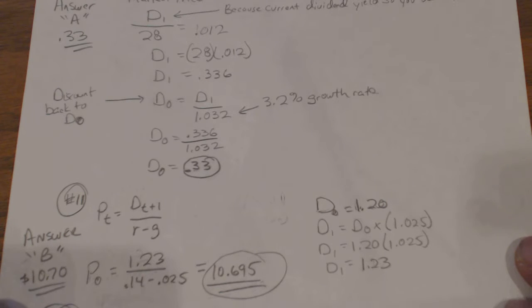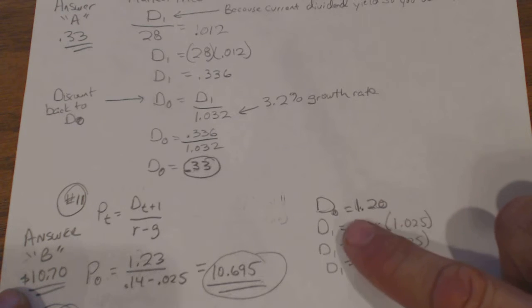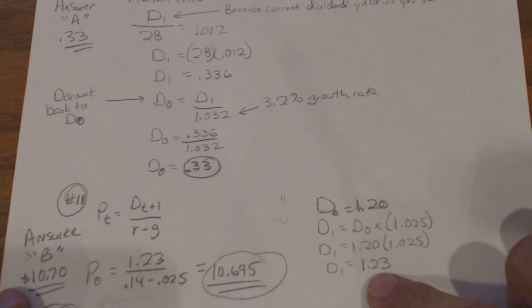You're trying to figure it out for period zero because you want to figure out what the present value of that is, and you know that Dt. So if you want the present value which is P0, then you know that Dt+1 is D1. And over here they told you that the last dividend D0 was a buck 20, told you the growth rate's 2.5 percent, so D1 is a buck 23.